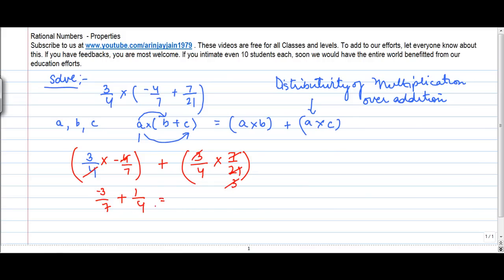LCM of these two numbers is equal to 28. 28 goes into 7 four times, 4 into minus 3 gives us minus 12 plus... 28 goes into 4 seven times, 7 into 1 gives me 7, so minus 5 by 28.